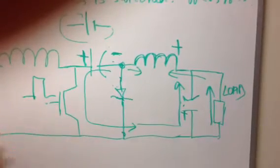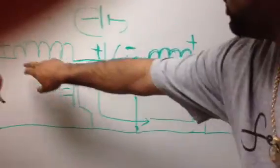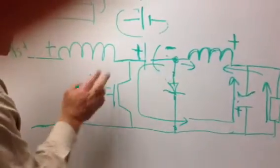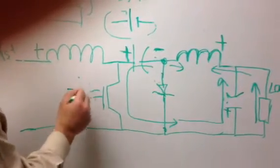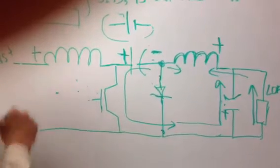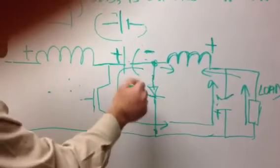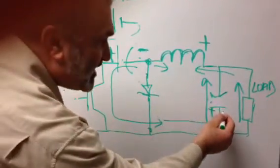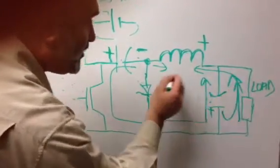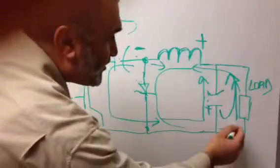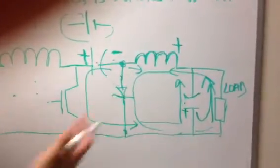So when I remove the trigger, the current will stop from here, but this guy will keep circulating it through and this guy will keep circulating it through, because the inductor doesn't want to give up its current. And how will it do that? Through this diode.